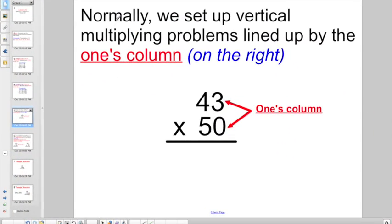And normally, we set up vertical multiplying problems lined up by the ones column, otherwise known as lining them up on the right. 43 times 50, we've been working in that since second grade, nice, neat, and straight. But here's a little shortcut for you.